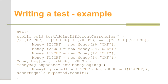You have the @Test annotation over your test method, and in your test method you have a line that says assert. It could be assert equals or assert true, and you have an expected value and a result. Here we're adding a bunch of money to the money bag and testing to see if the result is what we expected — testing the behavior of the money class, specifically that adding money of the same currency will increase the amount of that currency you have.